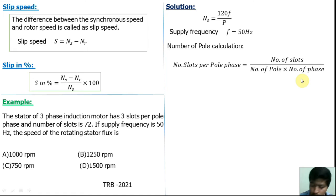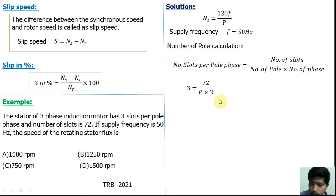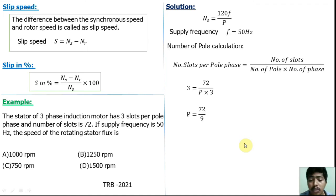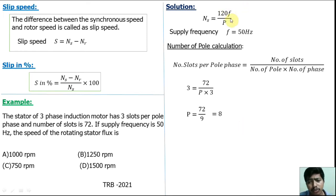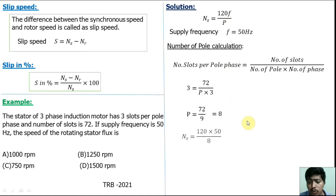Slots per pole per phase is 3, total number of slots is 72, and number of phases is 3. Solving: P = 72 / (3 × 3) = 72 / 9 = 8. Number of poles is 8. Now substituting into the synchronous speed formula: Ns = 120 × 50 / 8 = 750 rpm. So option C is correct.